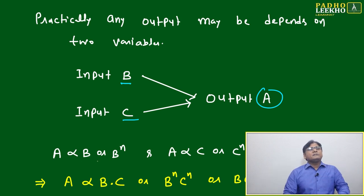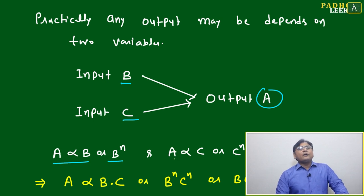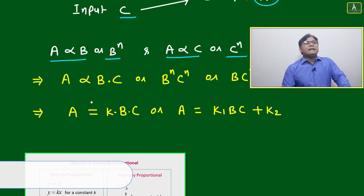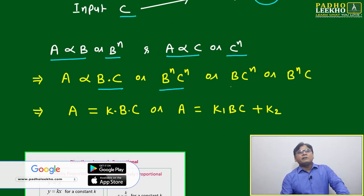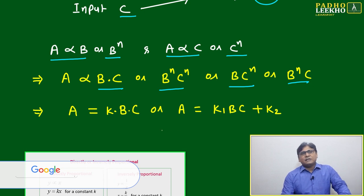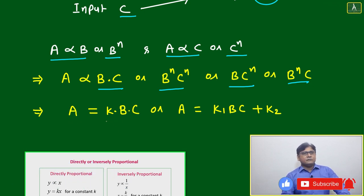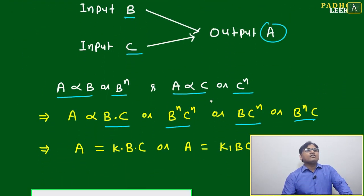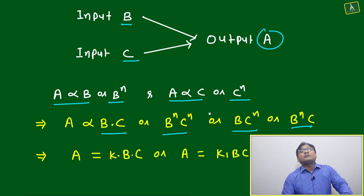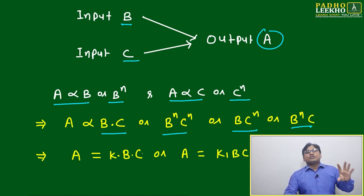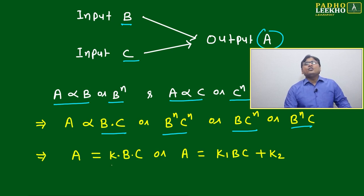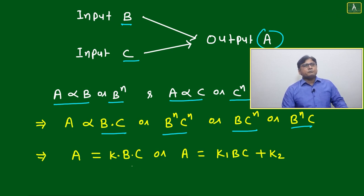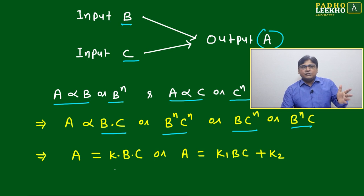Generally the situation will be a mixed kind: a directly proportional to b, or b to power n, or a directly proportional to c, or c to power n, or a mix such as a directly proportional to bc, b to power n times c to power n, and so on. A variety of situations can arise, like a = kbc, where k is the constant of proportionality — specifically the constant of direct proportionality.